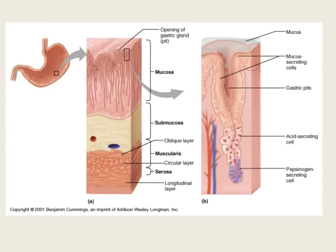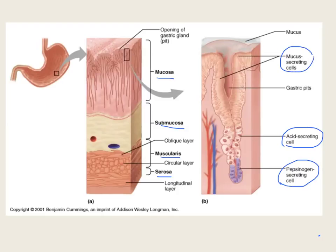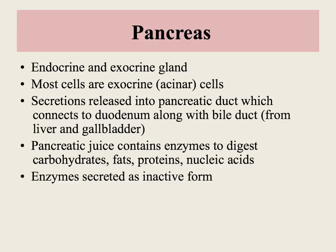A close-up of the stomach layer shows the mucosa, submucosa, muscle layer, and serosa — those four layers found throughout the digestive system. Looking at the stomach wall we have acid-secreting parietal cells, pepsinogen-secreting chief cells, and mucus-secreting cells at the top keeping everything protected.